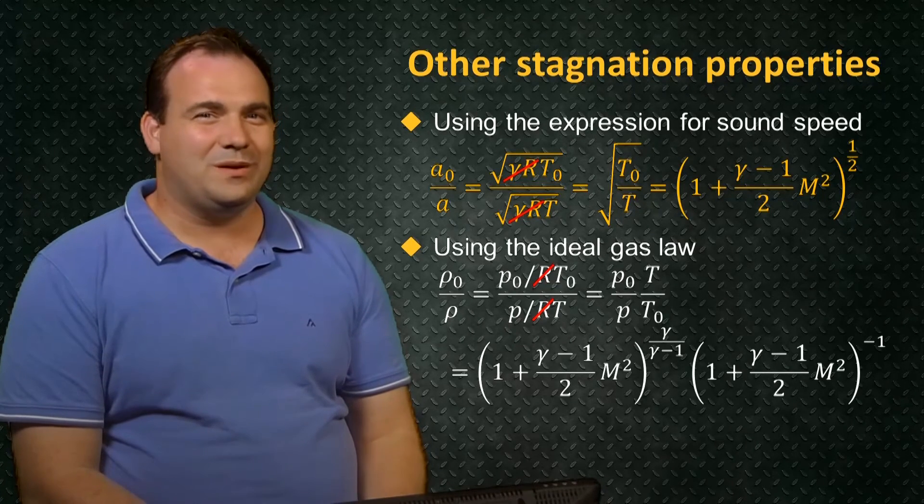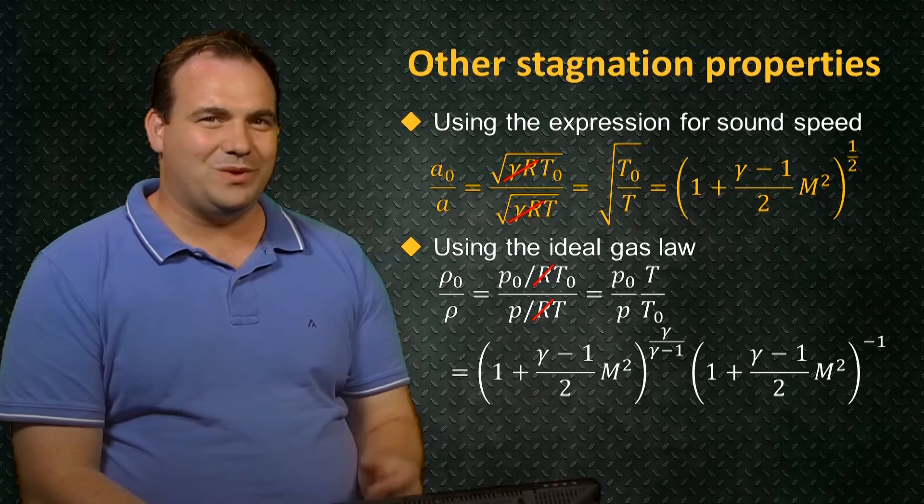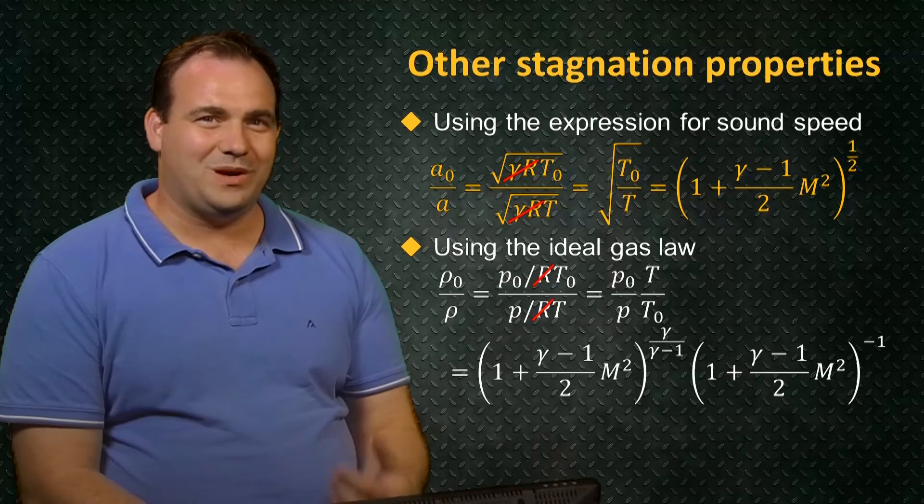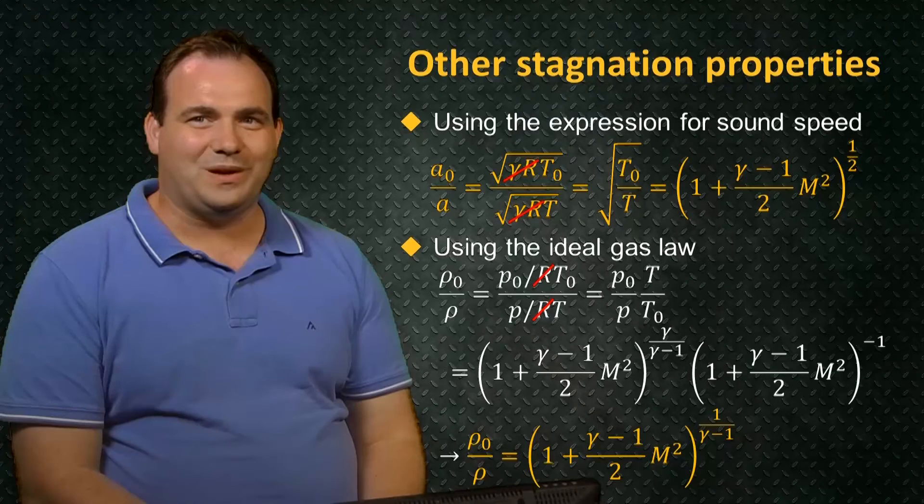After simplifying the power, we find that the stagnation density ratio is given by that same combination again, 1 plus gamma minus 1 over 2 times the Mach number squared, this time to the power of 1 over gamma minus 1.